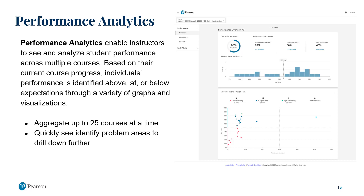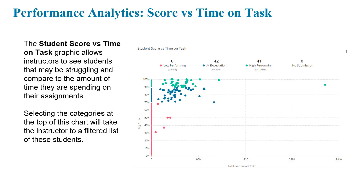You can also quickly identify problem areas. Here's an example of the student score versus time on task graphic, so that you can compare student performance to the amount of time they're spending on their assignments. You can select categories at the top and filter the list of students.